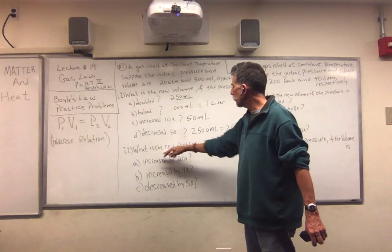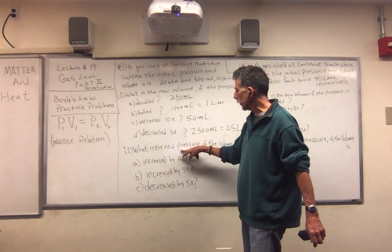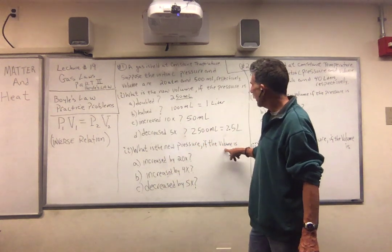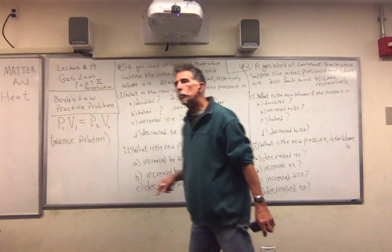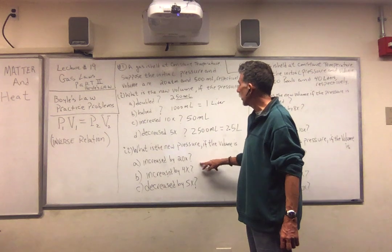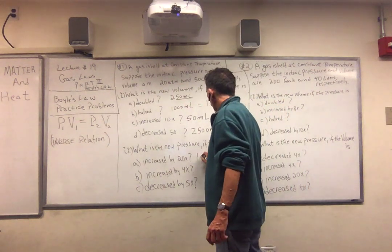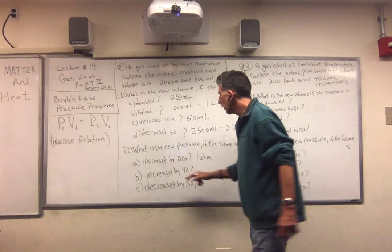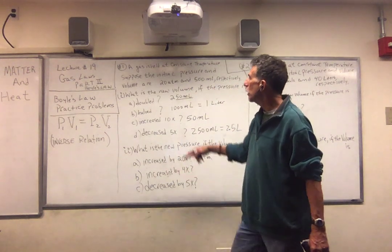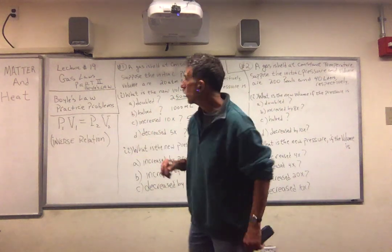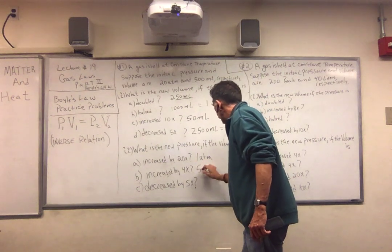Now, the second part — we're changing the volume and we want to find a new pressure. If I increase the volume 20 times, the pressure must decrease by 20 times. So 20 divided by 20, the answer is 1 atmosphere. The second part: increase the volume by 4 times means the pressure decreases by 4 times. 20 divided by 4 is 5 atmospheres.